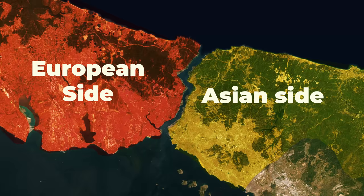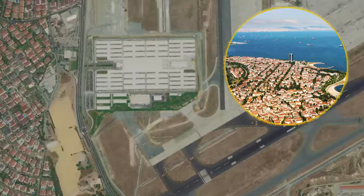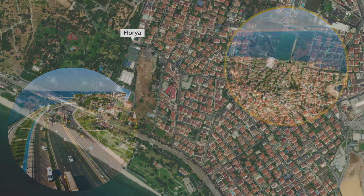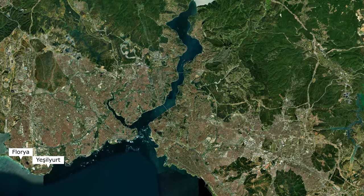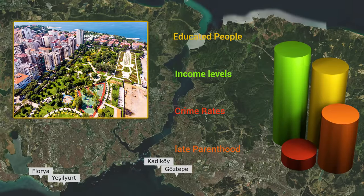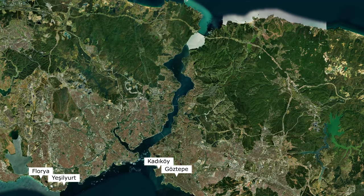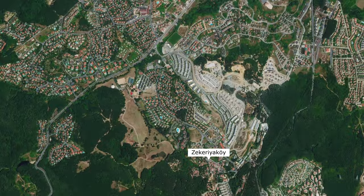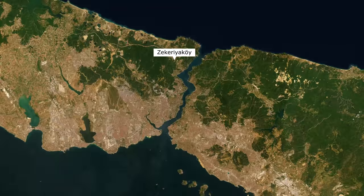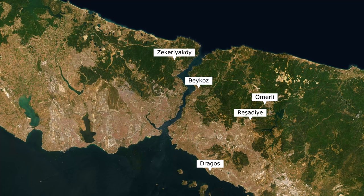Continuing through the second phase, we see well-planned higher-income areas as well. Yeşilyurt and Florya on the European side offer low-rises, larger homes, spaced-out neighborhoods, plenty of greenery, recreational areas, and a beach in the vicinity. On the Asian side, the Göztepe area in Kadıköy offers a similar feeling with taller buildings. When we look at the demographics of these areas, we see people with higher education levels, lower crime rates, higher income levels, and later parenthood. And the last urbanization type in the second phase covers areas planned for even higher income brackets — like Zekeriyaköy, a suburb concept similar to what you have in the US or European cities, along with Beykoz, Ömerli, Reşadiye, Dragos on the Asian side, and Sarıyer, Levent, and Büyükçekmece on the European side.